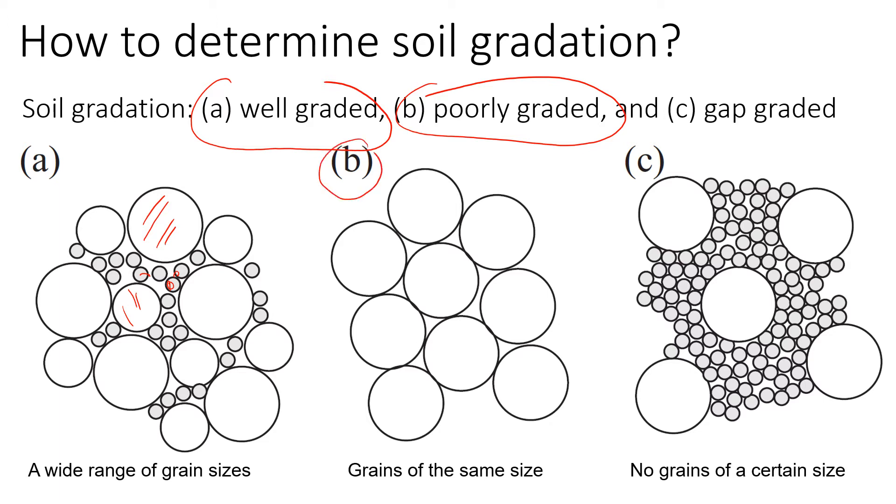The one shown here in B where we have one dominant size of particles, it can be either big particles, medium size, or small particles. We have a gap graded one shown here in C where we have, for example, one big size and small size, and the size in between, the medium size, is missing. So this is what gap graded means.